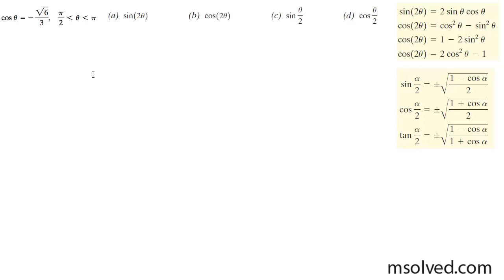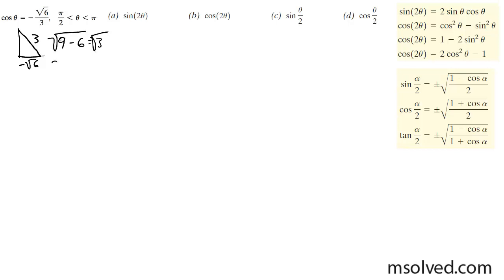Let's prove the double angle formulas for sine and cosine, and the half angle formulas for sine and cosine. The cosine of theta is equal to negative square root of 6 over 3, and it's in quadrant 2. Using the Pythagorean theorem, 9 minus 6 equals 3, so the square root is root 3. Since it's in quadrant 2, the sine of theta is positive: square root of 3 over 3.